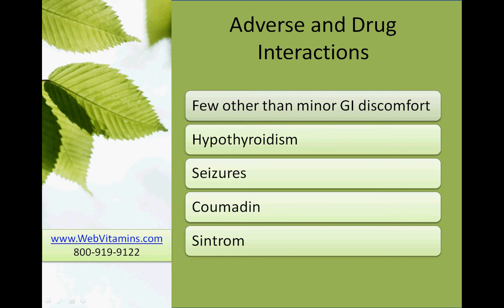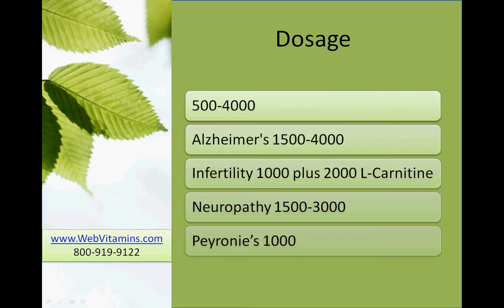Dosages used for Acetyl L-Carnitine are anywhere from 500 to 4,000 milligrams per day. People with Alzheimer's disease usually take anywhere from 1,500 to 4,000 milligrams. Infertility in males is usually treated with 1,000 milligrams of Acetyl L-Carnitine plus 2,000 milligrams of L-Carnitine. Diabetic neuropathy is usually treated with anywhere from 1,500 to 3,000 milligrams per day, and Peyronie's disease is treated with usually 1,000 milligrams per day.